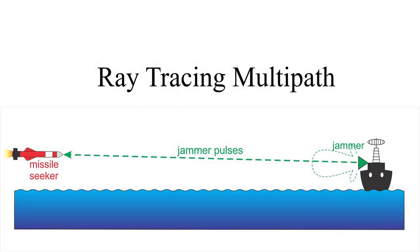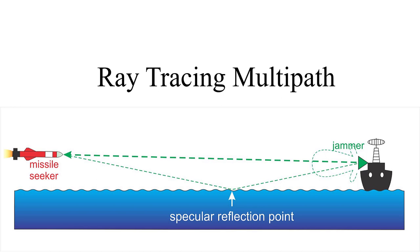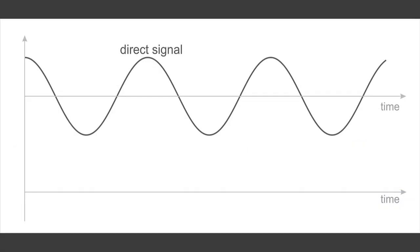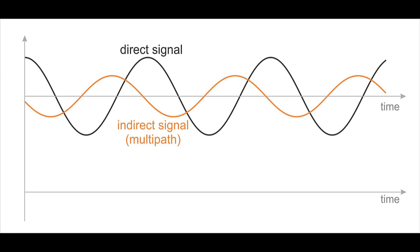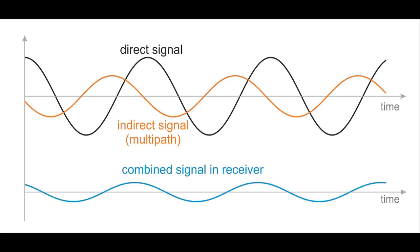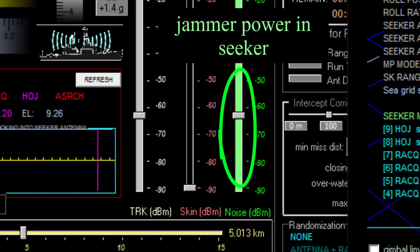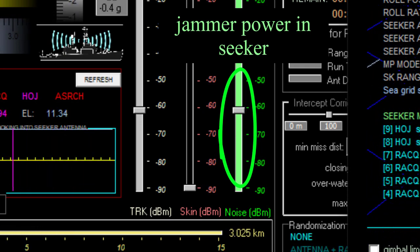The radio signals from both the jammer and the seeker will be reflected by the sea surface. That's called multipath, because there's more than one path for the signal to follow from the transmit antenna to the receive antenna — whether from jammer to seeker or seeker to jammer. There's a direct path and a path that includes the reflection from the sea surface. The signals from the direct and indirect paths combine coherently at the receive antenna, and the phase and amplitude differences cause the received signal to vary in amplitude as the lengths of the two paths change — in other words, as the missile approaches the ship.